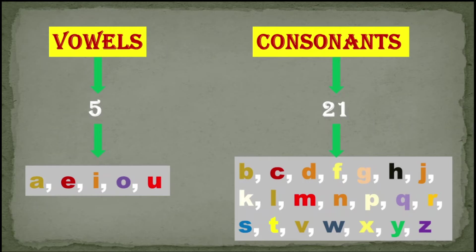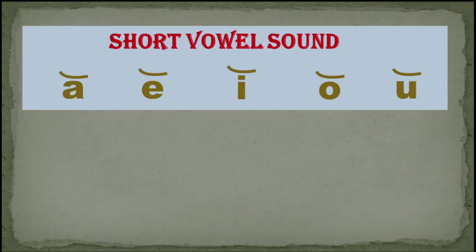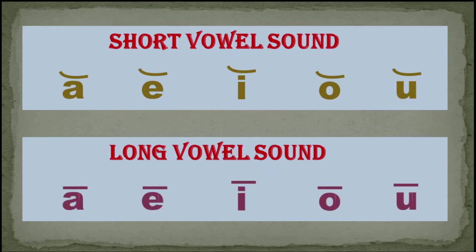Now let us discuss about their sounds. Short vowel sound — that is the short sound for A, E, I, O, U. And long vowel sound means their name itself: A, E, I, O, U. Now let's see how to pronounce these short and long sounds.